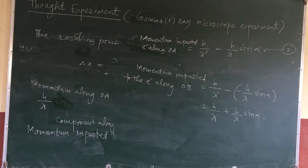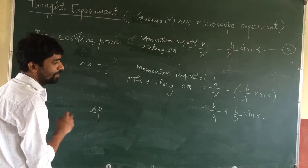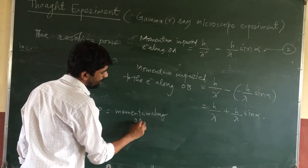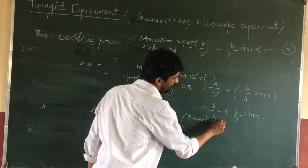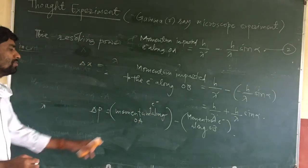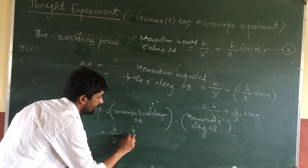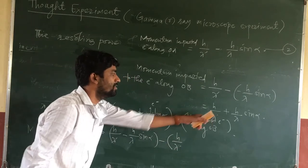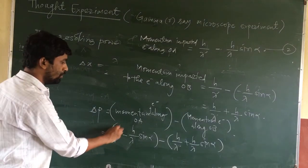The first equation gives momentum imparted along OA and the second along OB. To find delta p, we take the difference between the momentum along OA and the momentum along OB. The h/lambda-dash terms cancel each other. What remains is: minus h divided by lambda into sin alpha minus plus h divided by lambda into sin alpha, giving a magnitude of 2h divided by lambda into sin alpha.